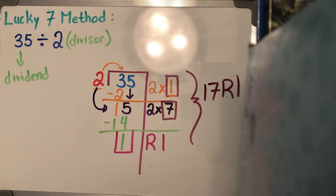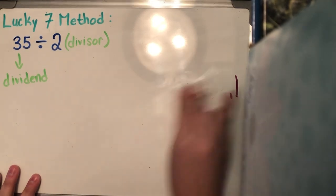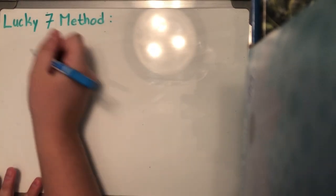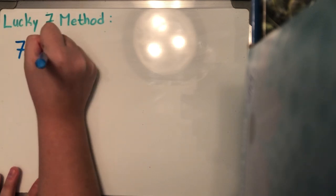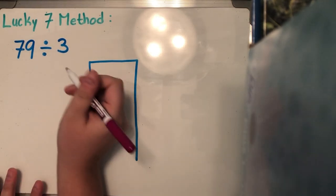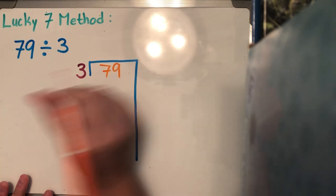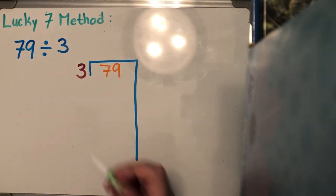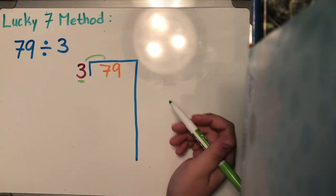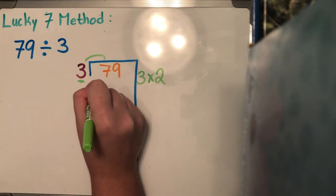We're going to keep doing some more problems, so stay with me if you're still a little confused. Hopefully it's bringing back some memories. All division with this lucky seven method is: multiply, subtract, and bring down. So our next problem, let's do 79 divided by three. I'm going to make my lucky seven bracket, put my divisor on the outside and my dividend in the middle. How many times can three go into seven without going over? Knowing my three times tables, three can go into seven two times because three times two is six.